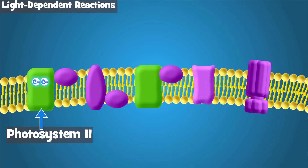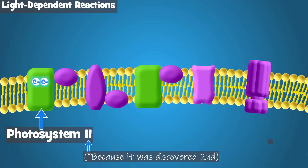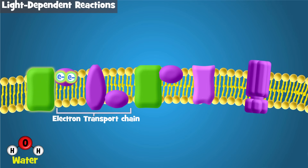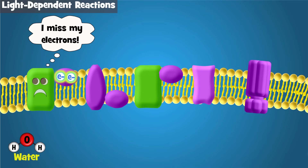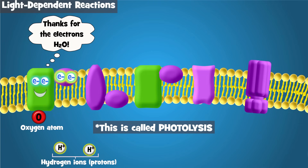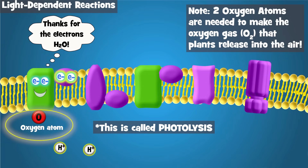Let's start with photosystem 2. When photosystem 2 absorbs light, electrons in chlorophyll gain energy, or get excited, from the light. These excited electrons leave chlorophyll and move to something called an electron transport chain. But since chlorophyll lost those electrons, they need to be replaced. To replace them, water is split and its electrons go to chlorophyll. When water is split, electrons, hydrogen ions, and oxygen are produced. You probably know that plants make oxygen when they do photosynthesis — this is where that oxygen comes from.